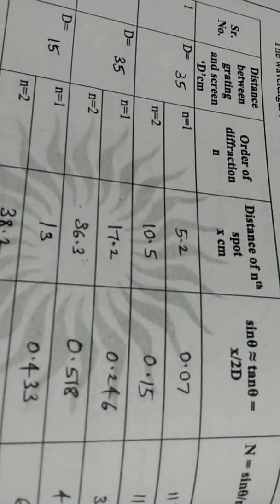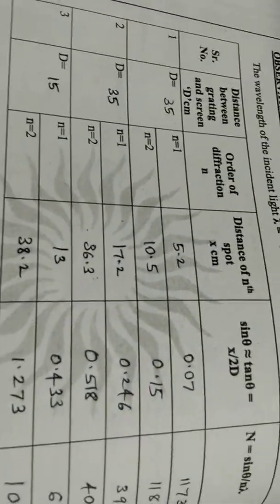Let us see how this experiment can be done. We mark everything on a plane sheet or on a graph sheet. We have taken three different D values — I changed the distance between the grating and the screen and marked all those parts clearly visible. The D values have been written here, and for three consecutive D values, we have marked the positions of the laser diffracted spots.